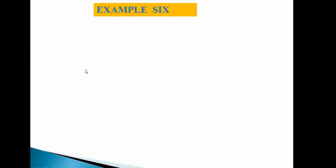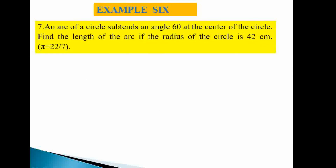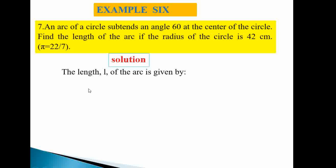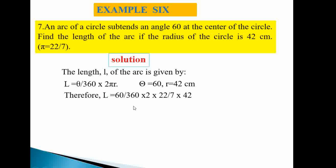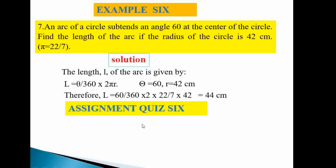Example six: An arc of a circle subtends an angle of 60° at the centre. Find the length of the arc if the radius is 42 cm (take π = 22/7). Using L = (θ/360) × 2πr: L = (60/360) × 2 × (22/7) × 42 = 44 cm.